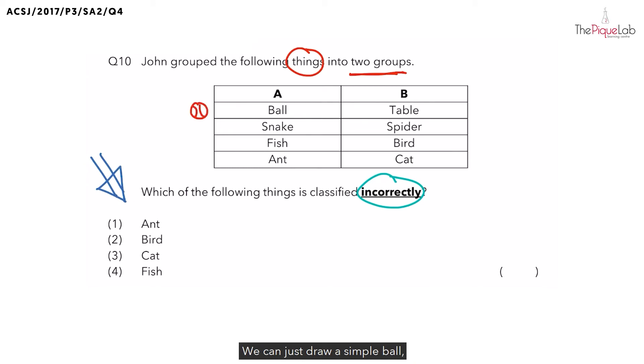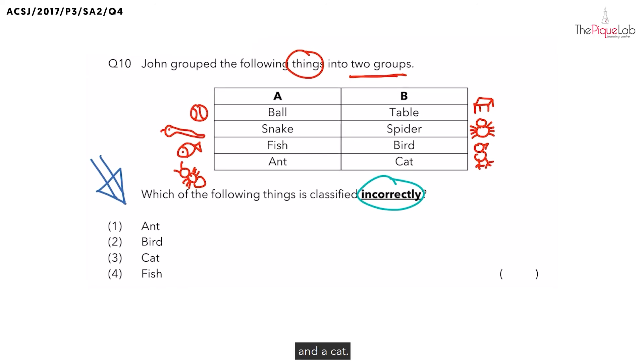We can just draw a simple ball, a simple snake, a simple fish, and an ant. And on the other side, we can draw a simple table, a spider, a bird, and a cat.